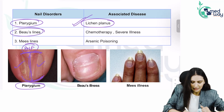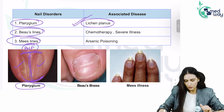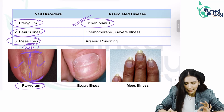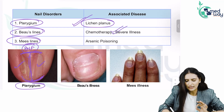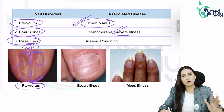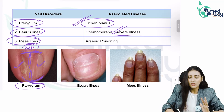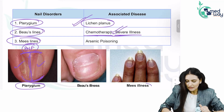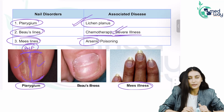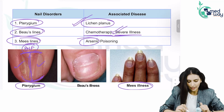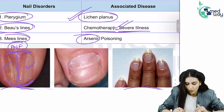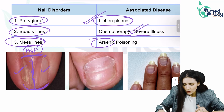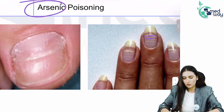Beau's lines and Mees' lines — we have already seen them before but we have not seen the images, so let's just see the images. Beau's lines are seen in any severe illness: long-term illness, cancer, chemotherapy. Mees' lines are very characteristic of arsenic poisoning. In Mees' lines, you will see these white lines.